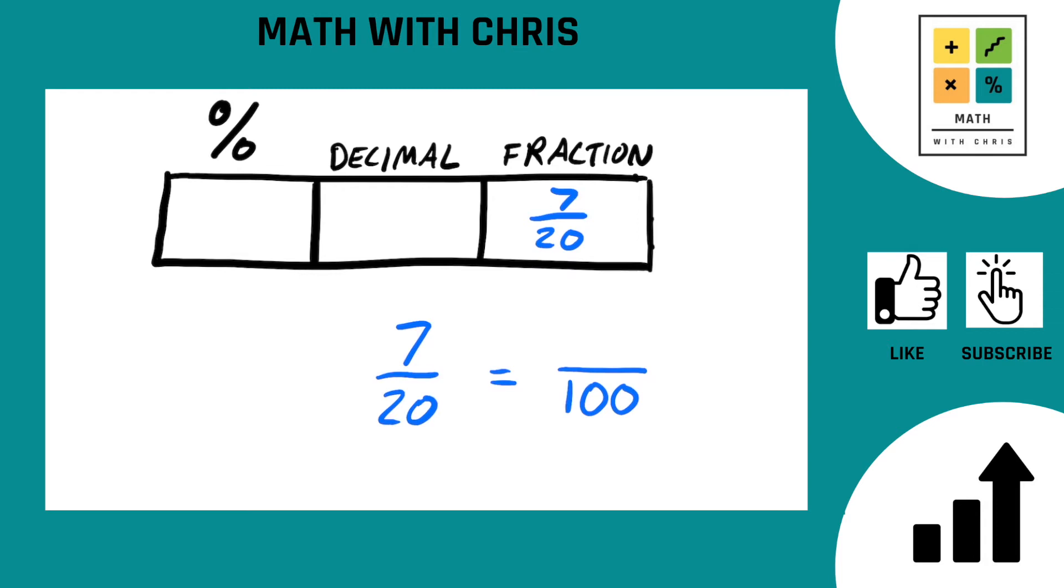So whatever we find up here at the top, let me give that a highlighted area for you. Whatever we find in that highlighted area is just going to be the percent. So how do we go from 7 20ths to something over 100?